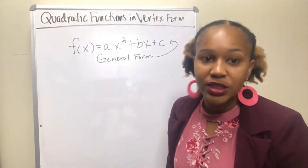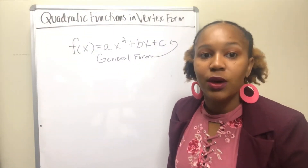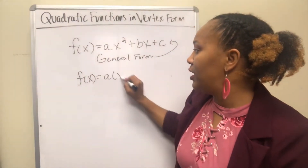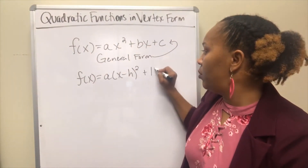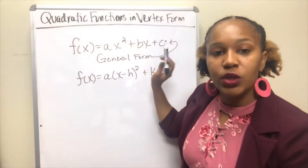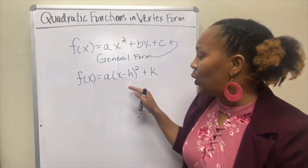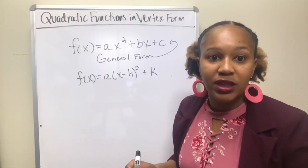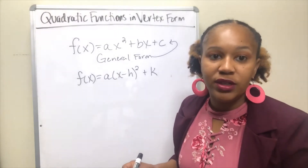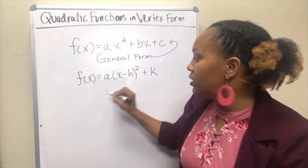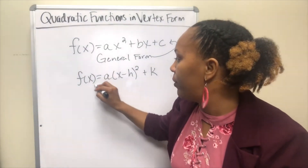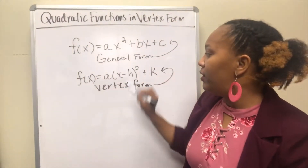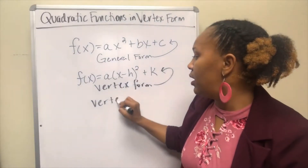What we're going to be looking at in this video is a quadratic function in vertex form. The vertex form looks like this: a times x minus h squared plus k. That's just taking the general form function and rewriting it in this format. One thing we like about vertex form is that we can look at the function and tell what the vertex of the parabola is. The vertex is the point h comma k.